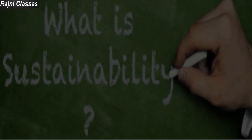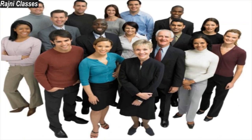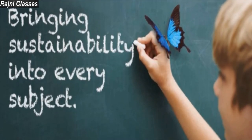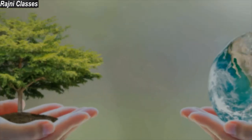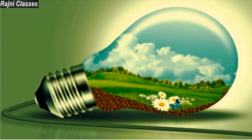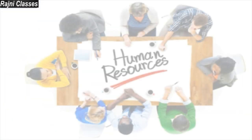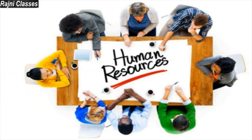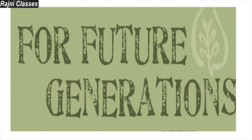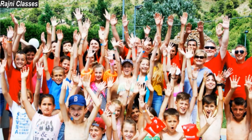The second pillar is sustainability. Sustainability refers to continuity in the availability of opportunities — this means that each generation must have the same opportunities. Therefore, we must use our environmental, financial, and human resources in such a way that our future generations are not disadvantaged of these opportunities.